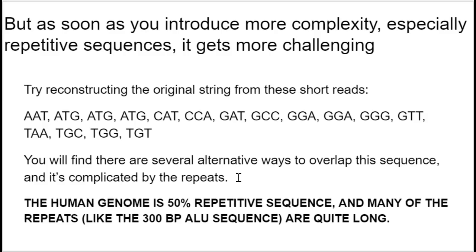Remember what you know about eukaryotic genomes. Using the human genome as an example: close to 50% of the human genome is comprised of repetitive sequences — things like telomeres and centromeres, and sequences like the ALU sequence, which is about 300 base pairs long and is found literally all over the human genome. So you're going to have an awful lot of repeats that are far more complex than just simple ATGs.